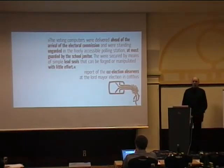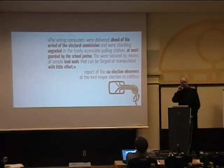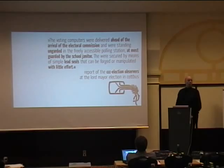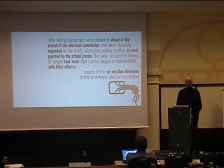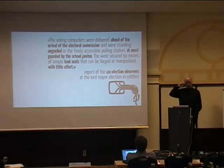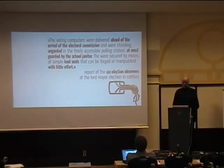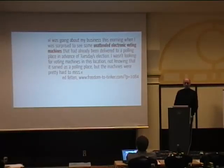We have an example from Germany — they also used the Nedap machines. The voting computers were delivered ahead of the arrival of the electoral commission and were standing unguarded in the freely accessible polling station, at most guarded by the school janitor. They were secured by means of simple lead seals — those little one-centimeter-diameter things that can be forged and manipulated with little effort. This is a report from a Chaos Computer Club election observer group working at a Lord Mayor election in Cottbus. This is not a single case.